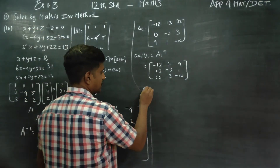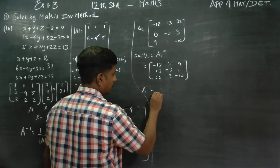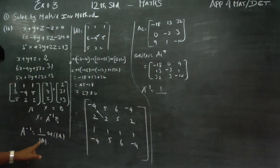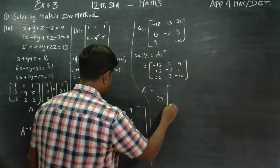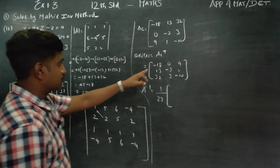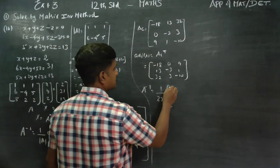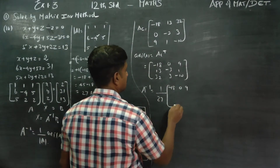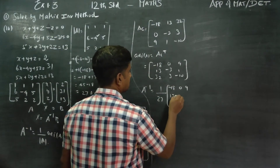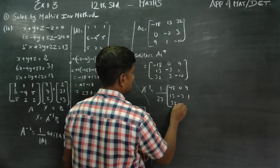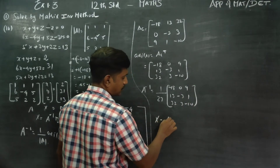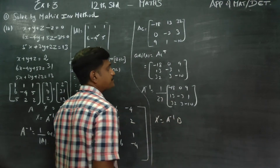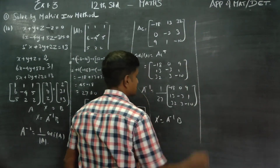Now we find the inverse. The inverse formula is: A inverse equals 1 by determinant A into adjoint A. Determinant A is 27, multiplied into the adjoint matrix: minus 18, 0, 9 / 13, minus 3, 1 / 32, 3, minus 10.